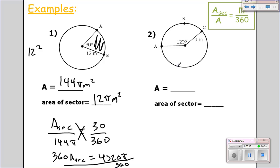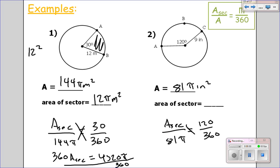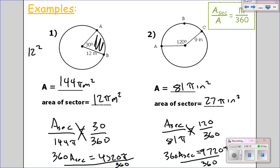Pause and try number two. Area of sector over total area — 9 squared is 81 pi inches squared — equals 120 over 360. Cross multiply: 360 times the area equals 81 pi times 120, which is 9720 pi. Divide by 360, and I get 27 pi inches squared as the area of the sector.